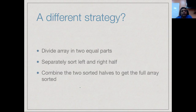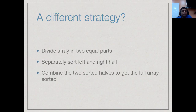Here is one way to sort an array more effectively. Suppose we divide the array into two equal parts — we break it in the middle and look at the left and right separately. If we can sort the left and right into independently sorted halves, and there is a way to combine the two halves efficiently, then we have achieved sorting by breaking it into two smaller sub-problems and combining the result.